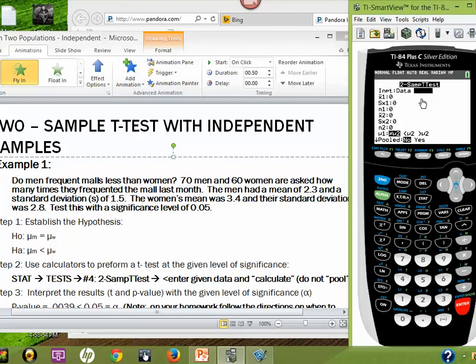And so, you can see we have x1, x-bar 1, standard deviation 1, and n1. We're going to put the men in this one. So, in the first case, the first average for men was 2.3. And then, the standard deviation for the men was 2.8. I'm going to put that in there. And then, the men were sampled. There were 70 of them. And so, we put in 70 for n.